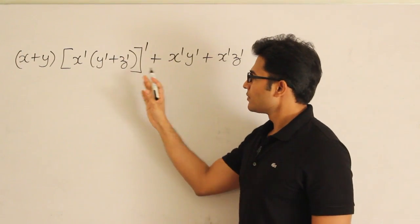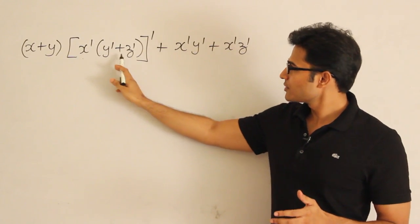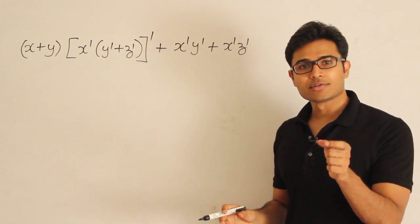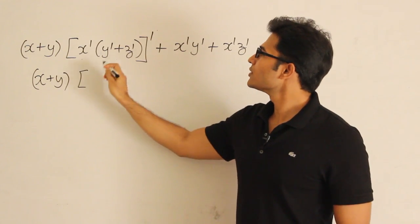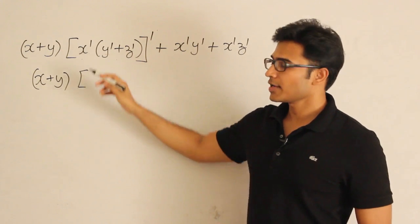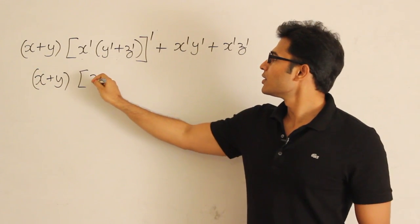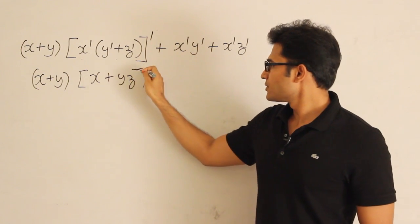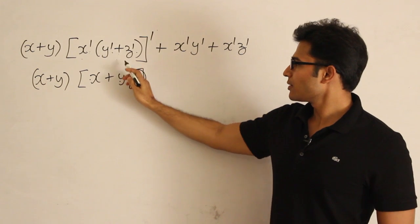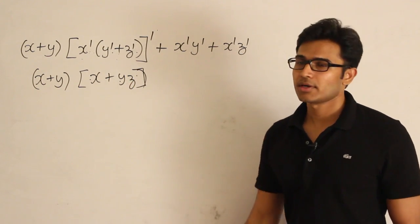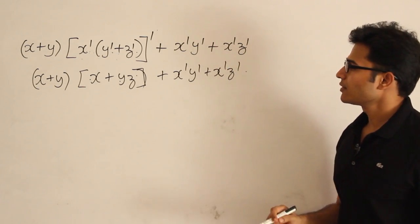Now let's simplify an expression by applying De Morgan's law. We have an expression of the form (x + y)' applied to the whole expression. Applying De Morgan's law, every variable is replaced with its complement and every operation is changed — plus becomes dot. We get terms like x replaced with x', y' replaced with y, z' replaced with z, and so on, yielding: x'y' + x'z'.